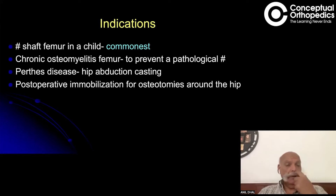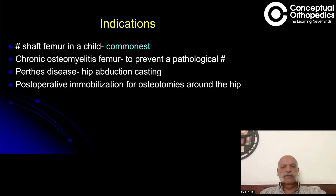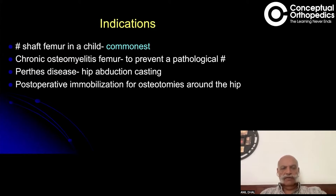The hip spica cast can be of two varieties: a single hip spica cast, in which only the affected hip is immobilized, and the one-and-a-half hip spica, in which the affected hip is immobilized in its entirety — the cast can extend right up to the ankle or toes on the affected side and to the knee on the other side. One-and-a-half hip spica is given in the older child, five years and above. For a younger child under five years, a single hip spica without immobilizing the contralateral extremity can be provided.